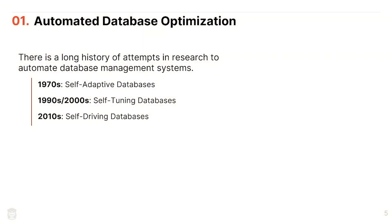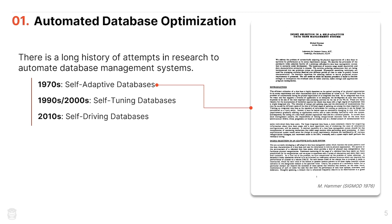Automated database tuning is an old problem. Ever since people built the first relational databases in the 1970s, they realized someone would have to decide the optimal query plan for a SQL statement, and the optimal way to physically organize data on disk and in memory. Humans have been doing this for a long time, but early on they recognized it'd be nice if computers could do it. One of the first papers on automatic index tuning came out in 1976 — instead of calling it machine learning or self-driving databases, they called these self-adaptive databases. That paper was actually written by one of my PhD advisors, and he's since passed away, so this is indeed an old problem.